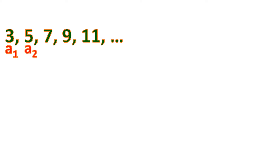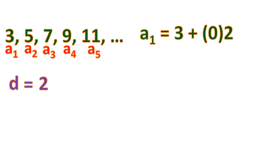Here's the sequence again with the common difference of 2. Observe that to find a sub 1, the first term, we just copy the first term — that's the first term plus 0 times the common difference, because we didn't add any common difference to get the first term.